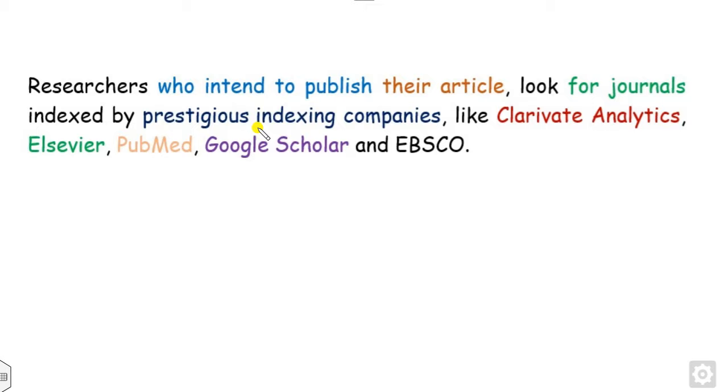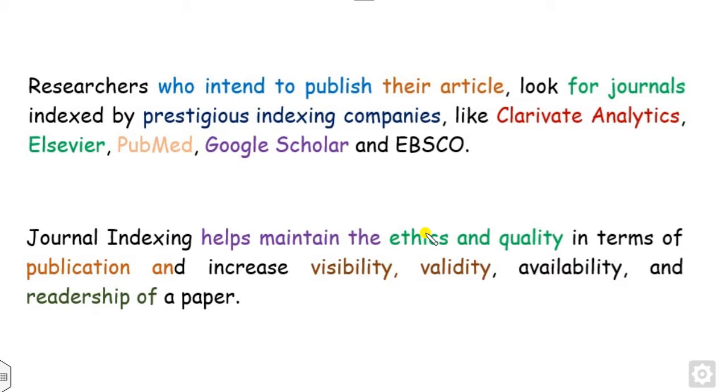Researchers always intend to publish their research articles in journals with major indexing like Clarivate, Elsevier, Google Scholar and many more. The target of these indexings is not only to maintain ethics and quality of publication, but also to help authors increase their visibility, validity and availability of their findings.